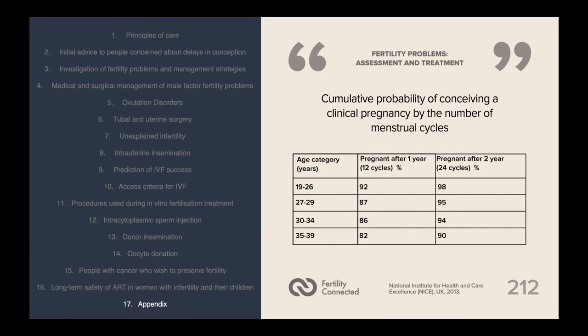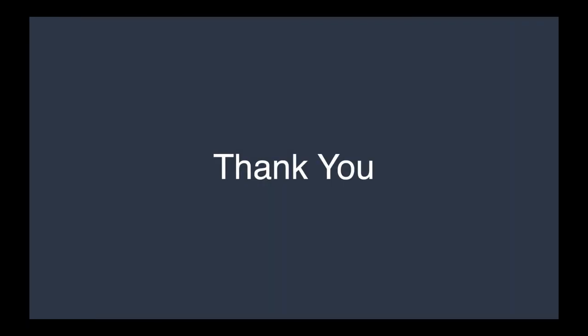A table studying the cumulative probability of conceiving a clinical pregnancy by the number of menstrual cycles shows three variables: age category, pregnancy after one year (12 cycles), and pregnancy after two years (24 cycles). The results show an indirect correlation: with increasing age from 19–26 years up to 35–39 years, there is a decreasing pregnancy rate, from 92% to 82% after one year and 98% to 90% after two years. That is the end of the presentation — thank you for listening. This is Fertility Connected; please subscribe or follow for more videos.